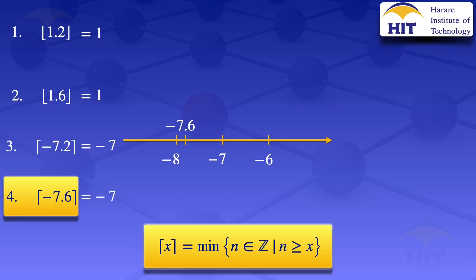When looking at ceiling values, we look at numbers to the right on the number line, and when looking at floor values, we look at numbers to the left. There is no need to draw the number line always — in this tutorial it was for illustration only. In practice, you just write down the value directly. Floor and ceiling values will be used very often in this course when looking at number theory, the division algorithm, the Euclidean algorithm, and the ceiling value when studying the generalized pigeonhole principle.